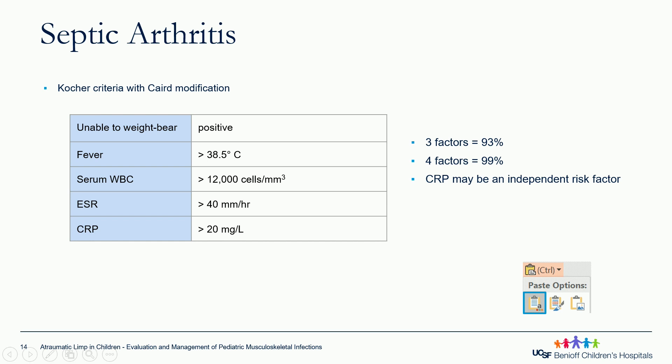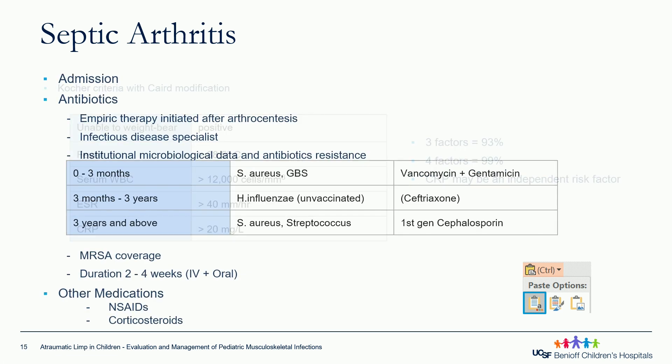CRP has been shown again as an independent risk factor, and greater than 20 is the cutoff for septic arthritis.